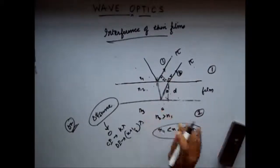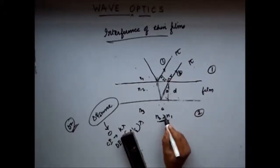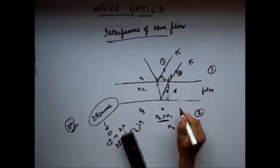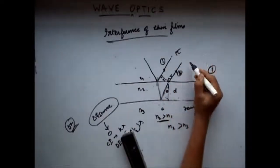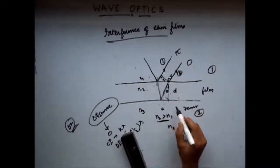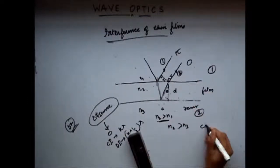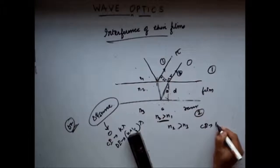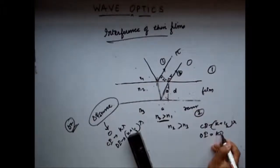If we have the case where n1 is less than n2 and n2 is greater than n3, meaning we have a rarer medium on the other side, then the first reflection undergoes a phase change of pi while the second undergoes no phase change since it reflects off a rarer medium. In that case the conditions interchange: we get constructive interference for (k + ½)λ and destructive interference for kλ.